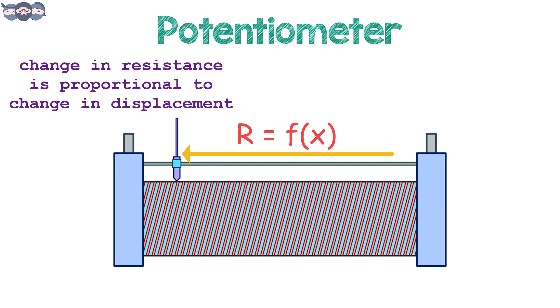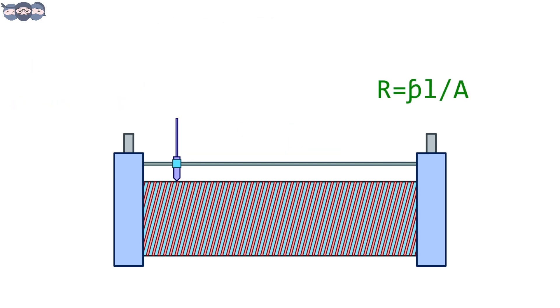If we remember correctly, the formula for resistance is R equals ρ into L by A. So, if the length of the wire changes, the value of the resistance also changes. This property is utilized to measure displacement changes using resistive technique.